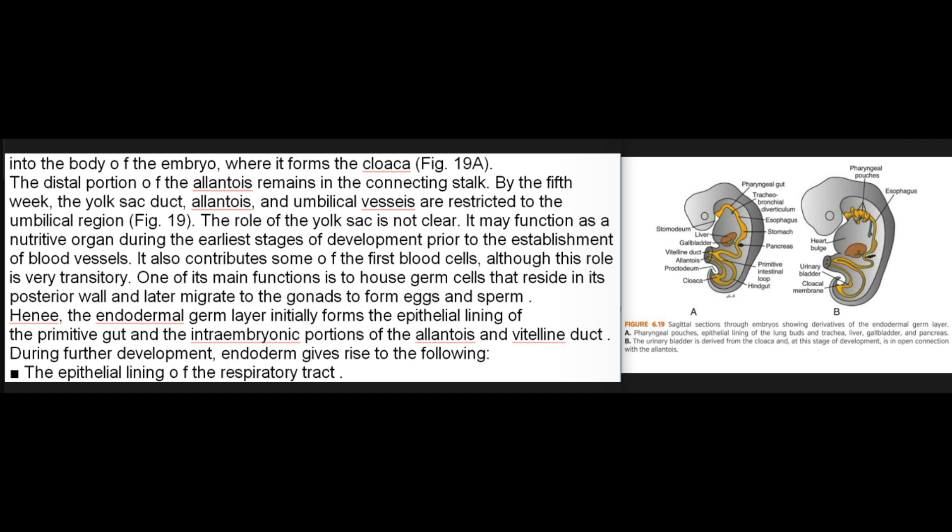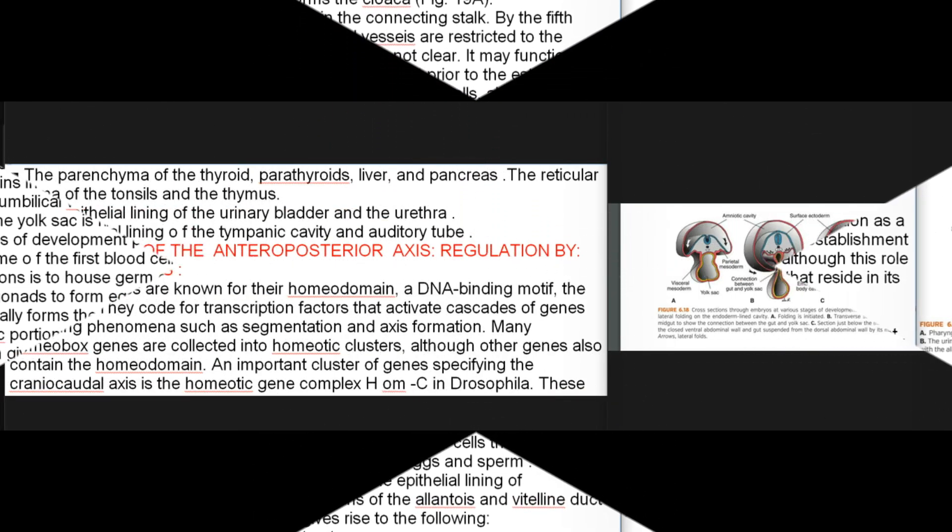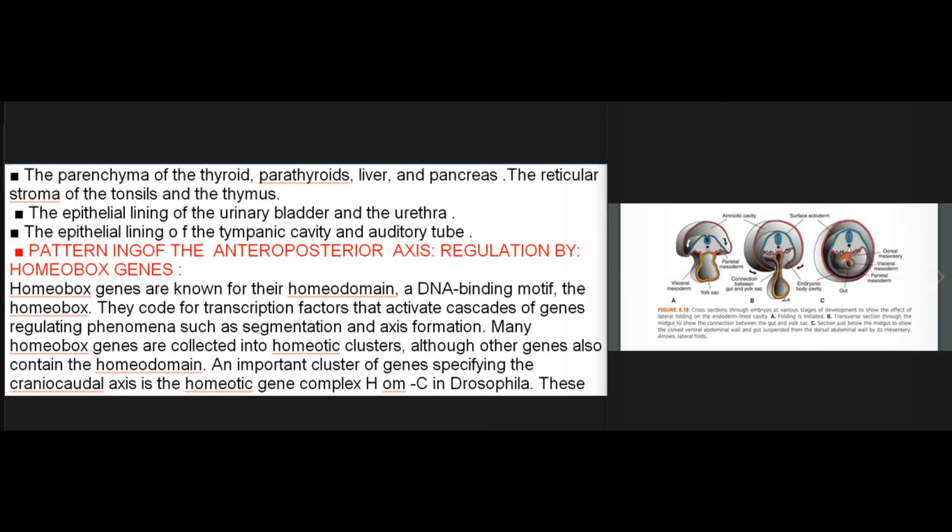The endodermal germ layer initially forms the epithelial lining of the primitive gut and the intraembryonic portions of the allantois and vitelline duct. During further development, endoderm gives rise to the following: the epithelial lining of the respiratory tract; the parenchyma of the thyroid, parathyroids, liver, and pancreas; the reticular stroma of the tonsils and the thymus; the epithelial lining of the urinary bladder and the urethra; and the epithelial lining of the tympanic cavity and auditory tube.